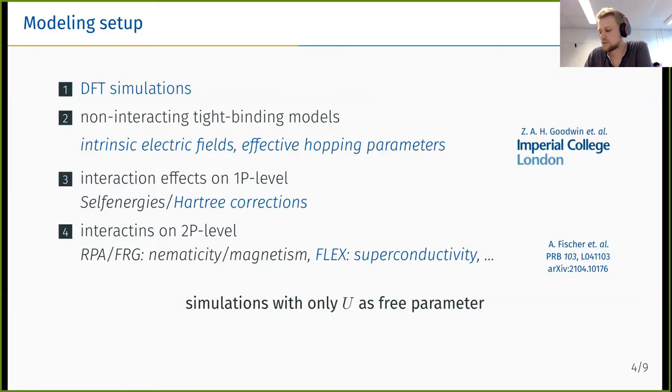Why is an atomistic view on these correlation effects in these systems important? That is basically shown here as the bottom line of this slide. By starting from ab initio simulations and then fitting tight binding models to these ab initio simulations, including all types of intrinsic electric fields or effective hopping parameters or even interactions on the one particle level such as self energies or Hartree corrections, we have basically only one parameter left as a free parameter, and that is the interaction strength of the Hubbard U, or more generally speaking, the interaction. Compared to other models, there are much more free parameters just to even reproduce the band structure at a certain twist angle.